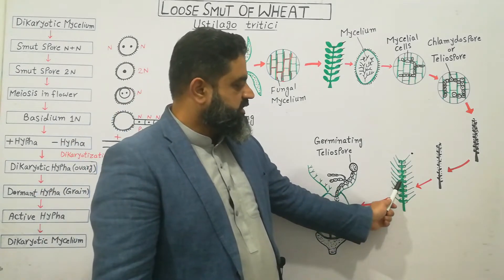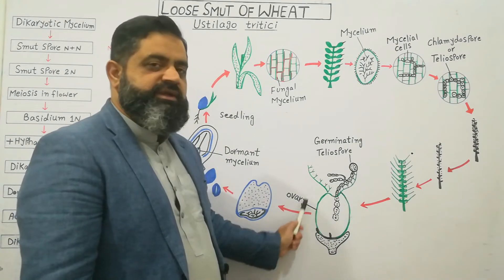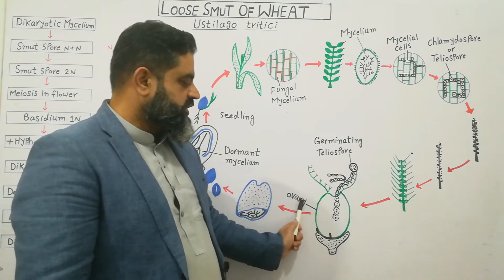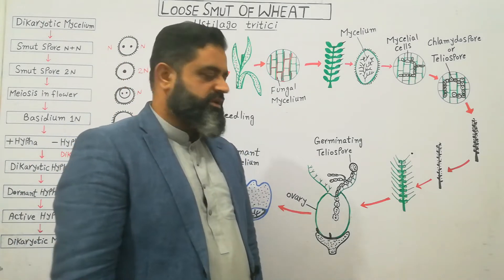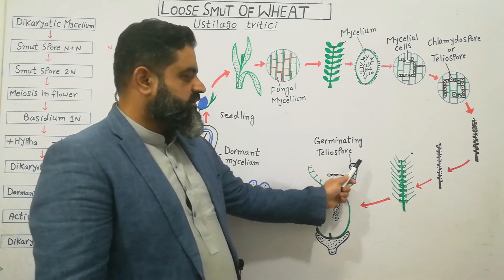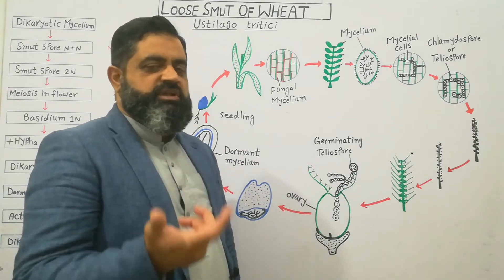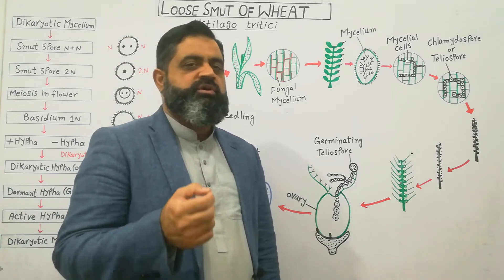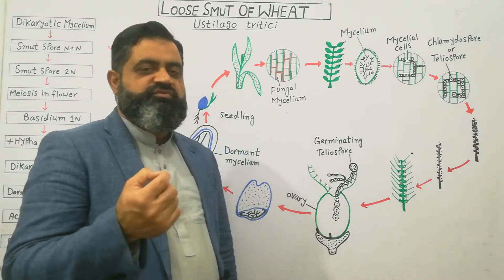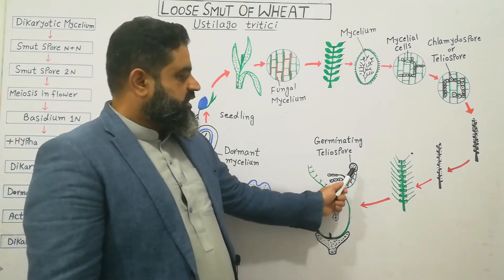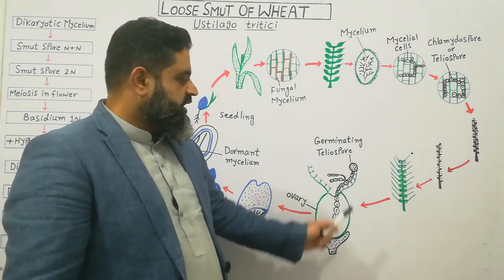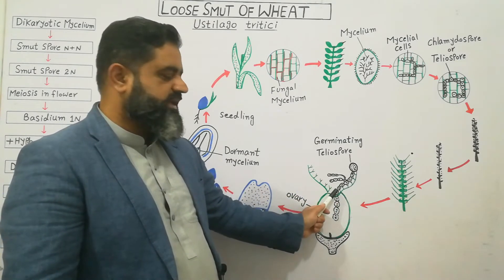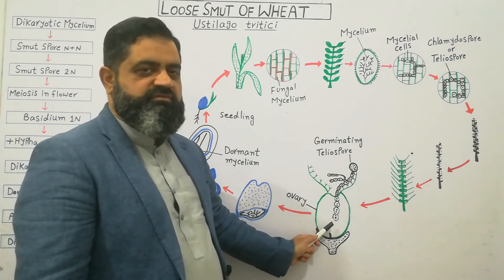I have taken an ear or flower right over here to show the details of how this spore is going to germinate. This is the basic part of the flower, and this is known as the ovary in which fertilization and seed formation will take place. On the surface of the stigma this spore — known as a teliospore or chlamydospore — of fungus Ustilago tritici lands and starts to germinate, producing a dikaryotic mycelium which rapidly grows on the surface of the flower and then penetrates deep into the structure of the ovary where the seed is going to be formed.